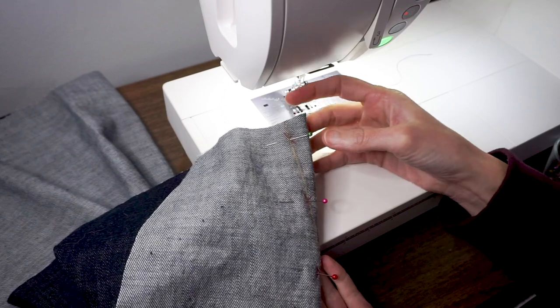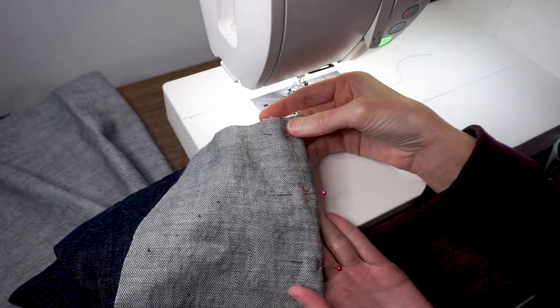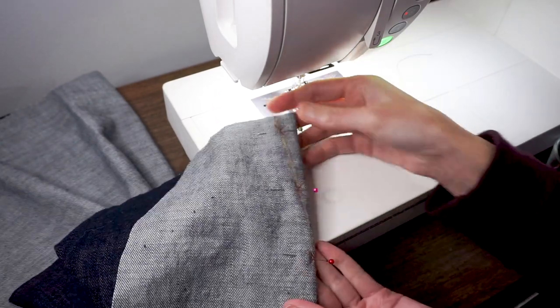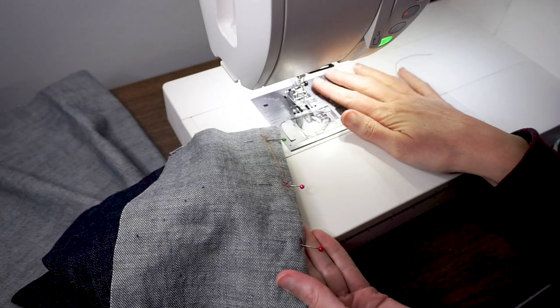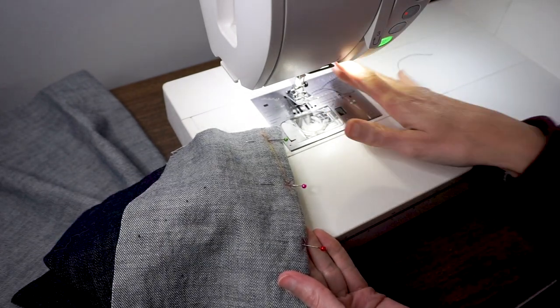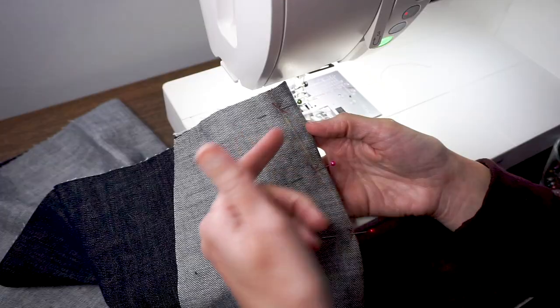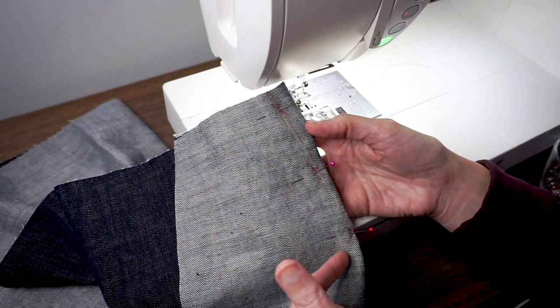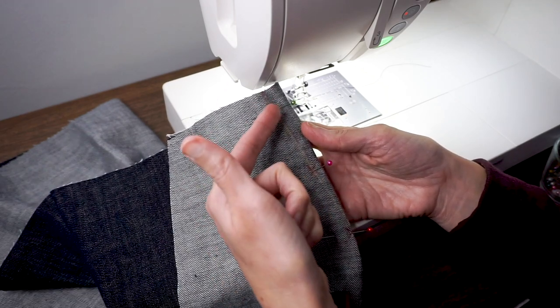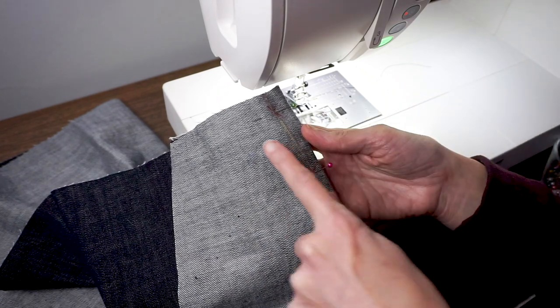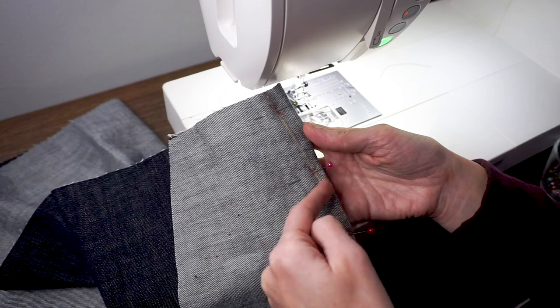To sew our dart we're going to start at the raw edge and go to the point. So you'll be stitching the bigger part of the dart first and then narrowing down to the very end. I'm just using a straight stitch. Here I have the line drawn in and I will stitch right along that line. If you didn't draw in the line you can just eyeball it and basically connect the dots. I like to have a pin going into each dot so that I have a place to aim to when I connect those dots.